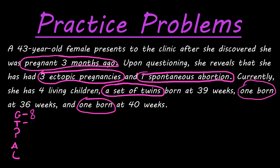Now, how many term births have already happened? She's currently pregnant, so this pregnancy hasn't been born. The three ectopic pregnancies count as abortions because they occur before 20 weeks. One spontaneous abortion. The set of twins born at 39 weeks — anything 37 weeks or greater is a term birth — so that's one term birth. One born at 40 weeks is also term. So total term births is two: the set of twins and the one born at 40 weeks.